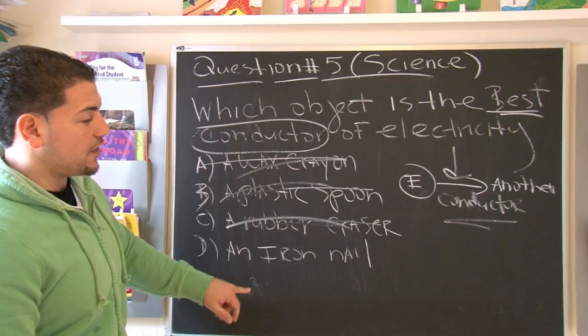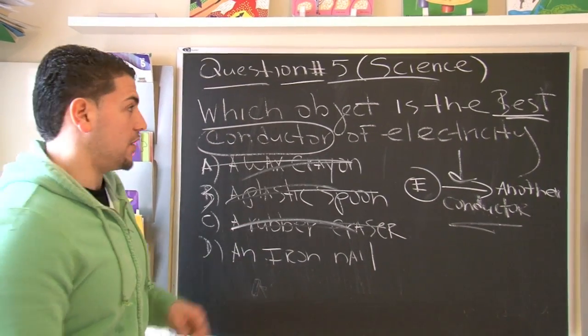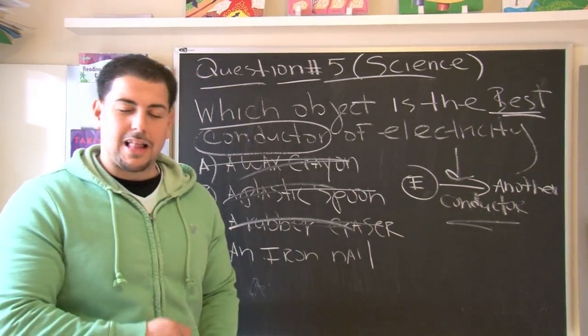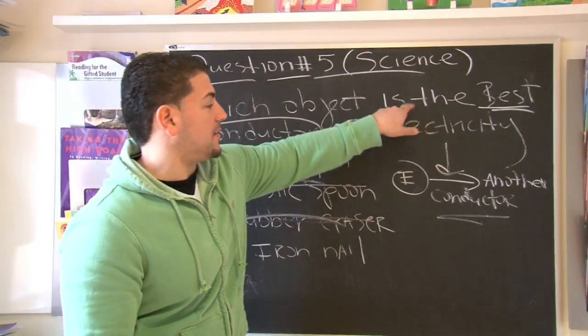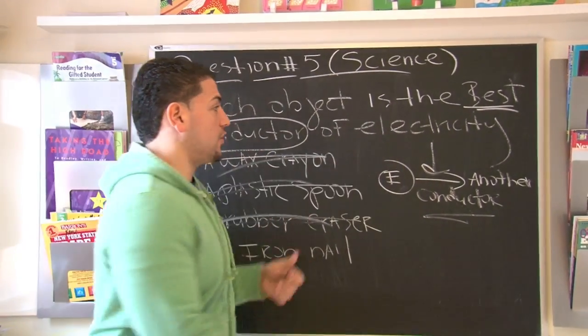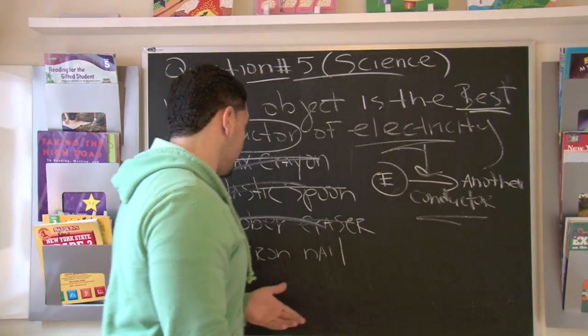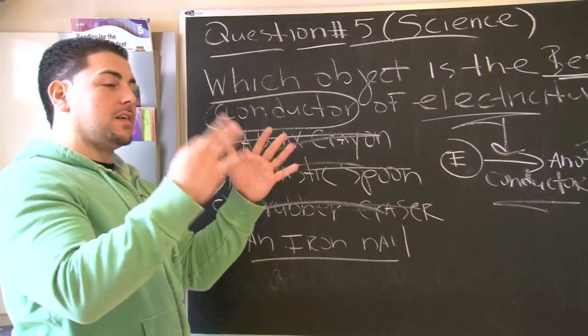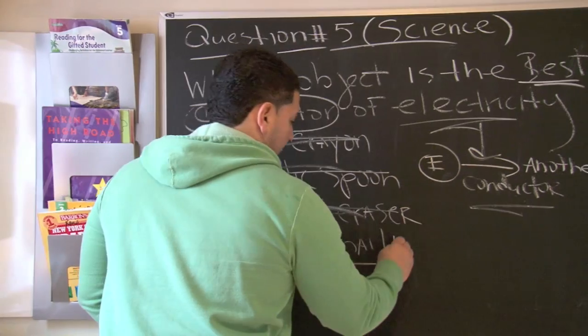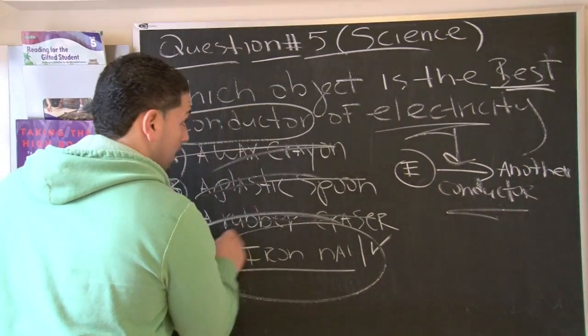But an iron nail. Iron. We're always thinking about chemical elements, periodic table, chemistry. Which object is the best conductor of electricity? Well, you know it's got to be an iron nail, because iron is one of the best conductors of electricity. So that's got to be the right answer.